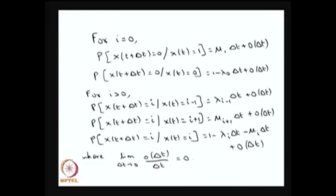For i greater than 0, the probability the system stays in state i is 1 minus λᵢ times delta t minus μᵢ times delta t plus order of delta t. The system moving from state i+1 to i (one step backward) has rate μᵢ₊₁ delta t. The system moving from state i-1 to i (one step forward) for i > 0 has rate λᵢ₋₁ delta t plus order of delta t.